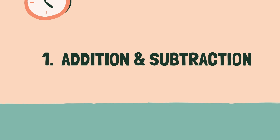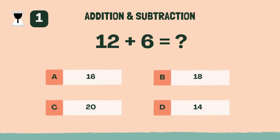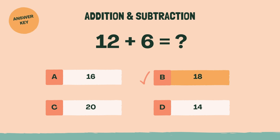Category 1: Addition and Subtraction. What is 12 plus 6? The answer is B, 18.